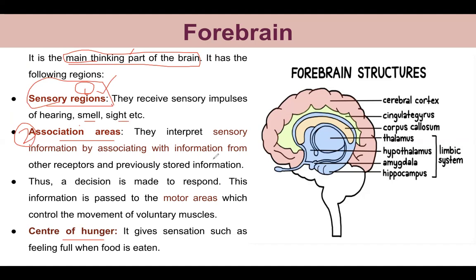The associated areas interpret sensory information by associating it with information from other receptors and previously stored information. For example, if you burned your hand on something hot as a child, that information is stored in your brain permanently. So when you encounter a hot object again, the brain associates the current sensory impulse with the old stored memory and interprets how to react. This output is then sent to the motor areas, which control the movement of voluntary muscles.